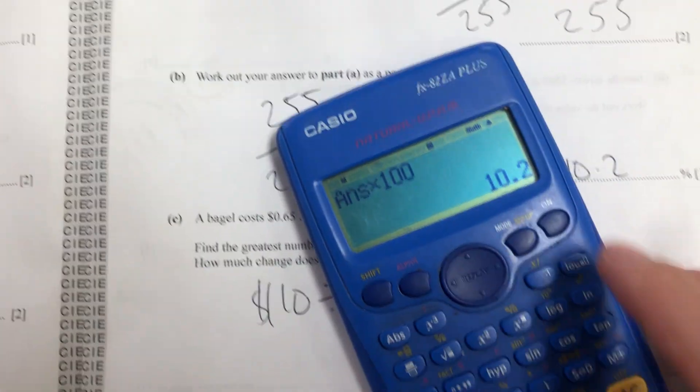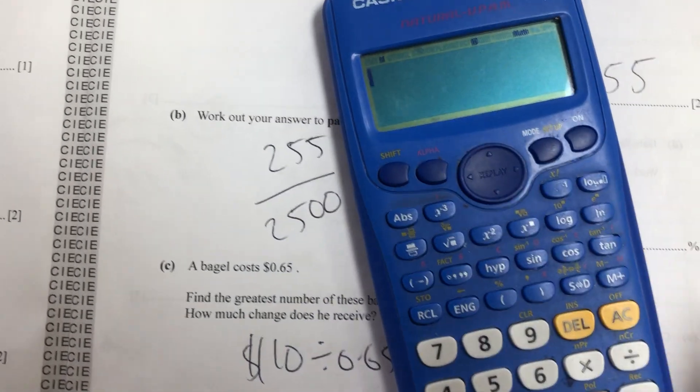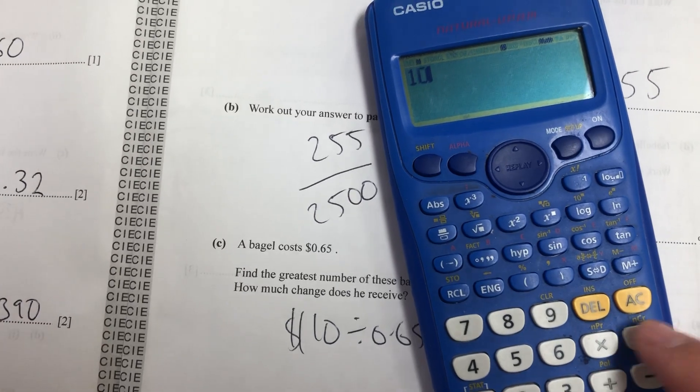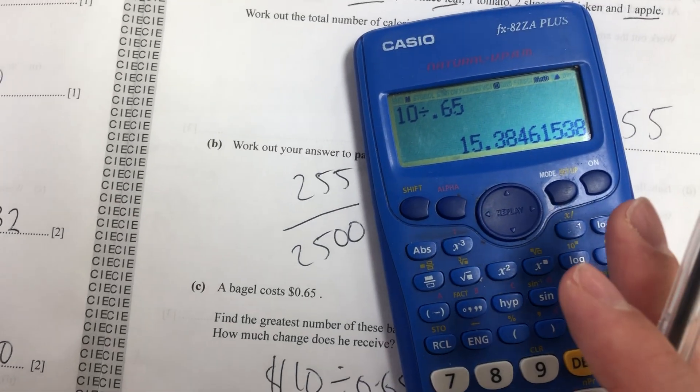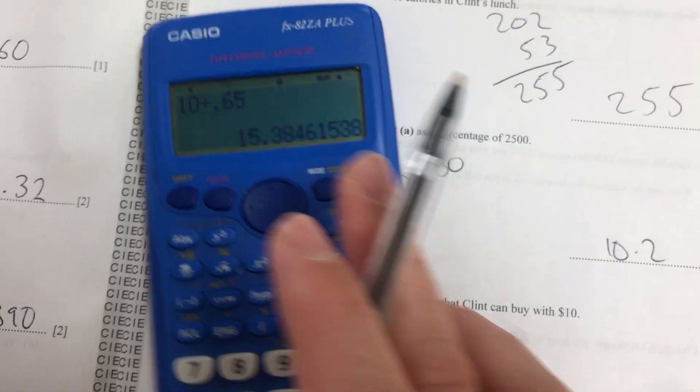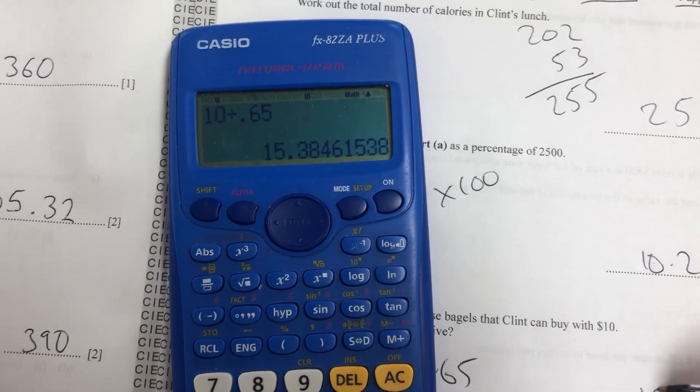Again, it's a calculator paper, so you might have a GDC or a scientific calculator. 10 divided by 0.65, 15 and a little bit. So in terms of whole bagels, it'll be 15.